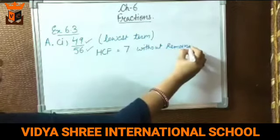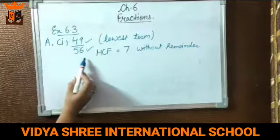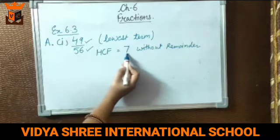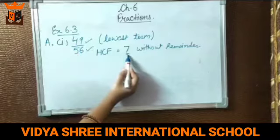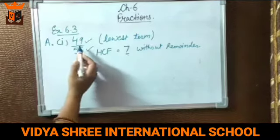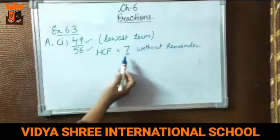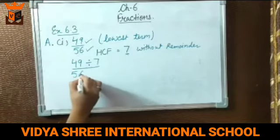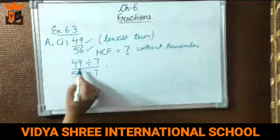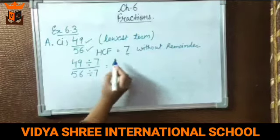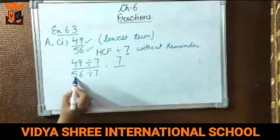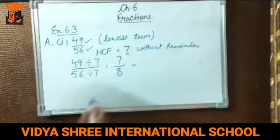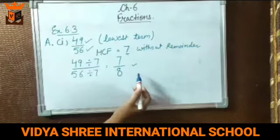Agar aapko tables yaad hain, toh aapko pata hoga 49 and 56 are divisible by 7 only. 49 goes 7 times in the table of 7, and 56 goes 8 times. So the lowest term of 49 by 56 is 7 by 8.